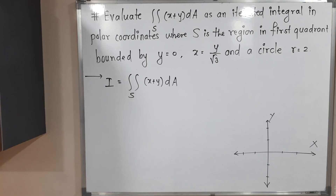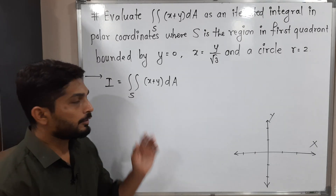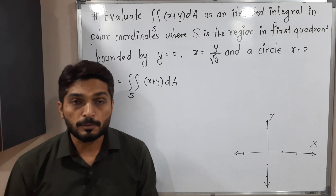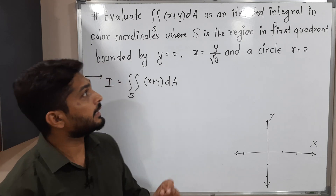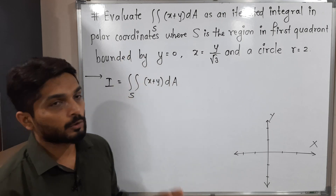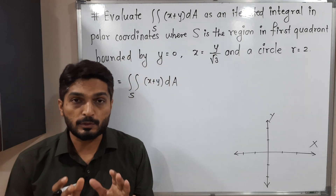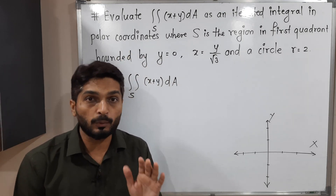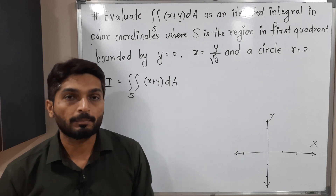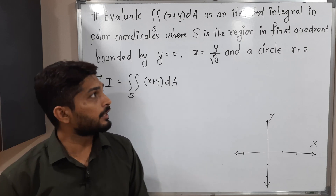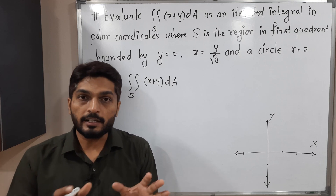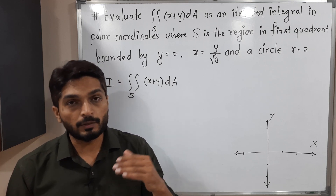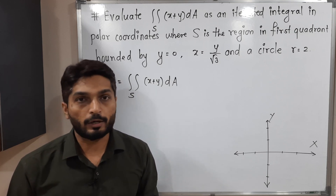Hi everyone. In this video we are going to discuss this example. We have to find the value of this double integration by converting it into an iterated integral in polar coordinates. That means we have to convert this problem into polar coordinates and then solve it. So here they have mentioned the region S. Let us find the region S first, then we will convert the problem into polar coordinates.